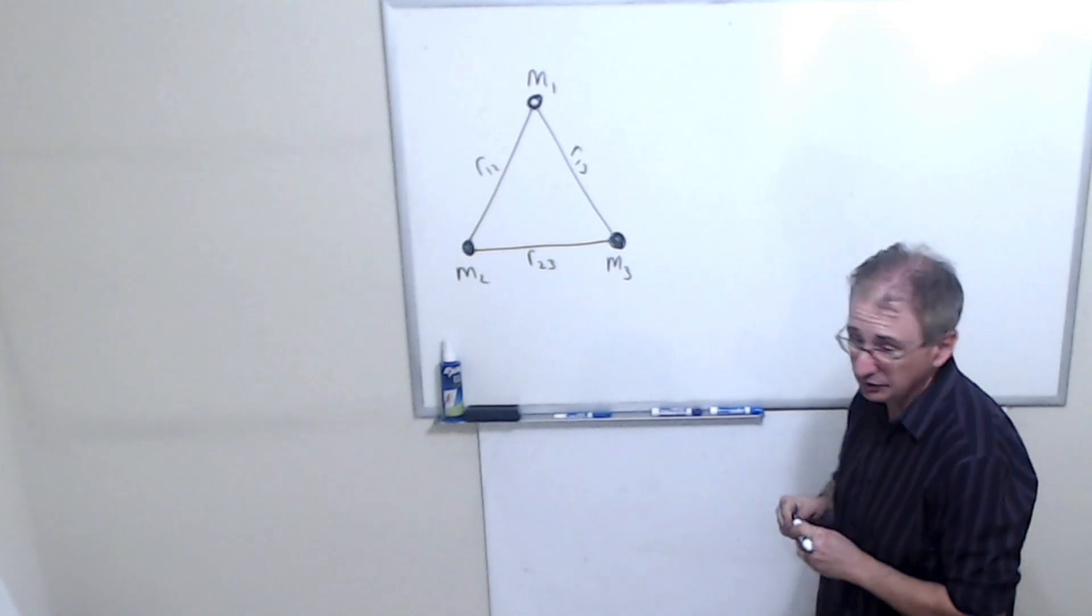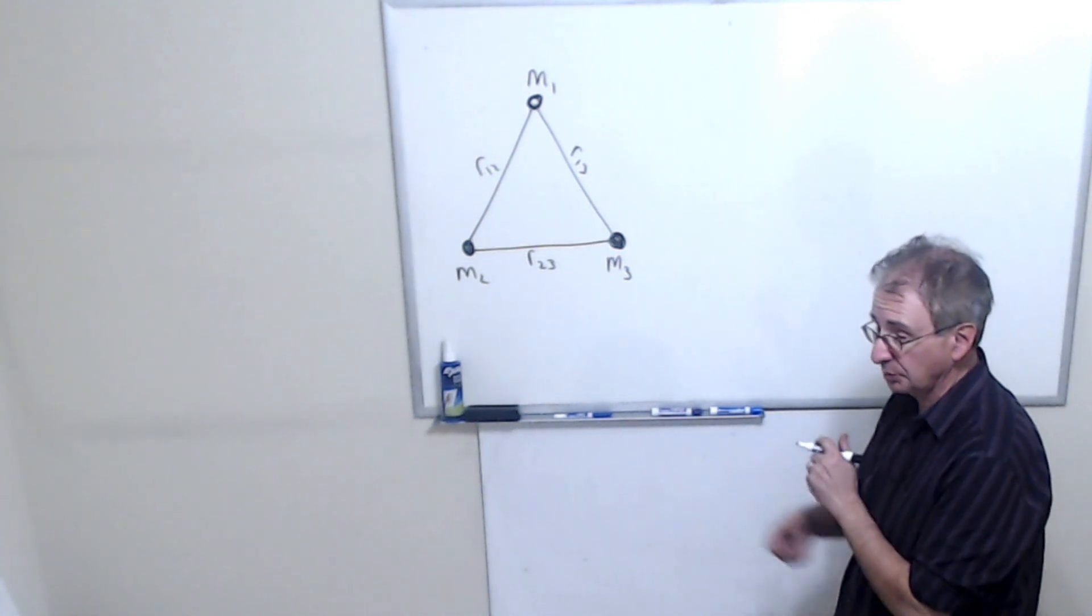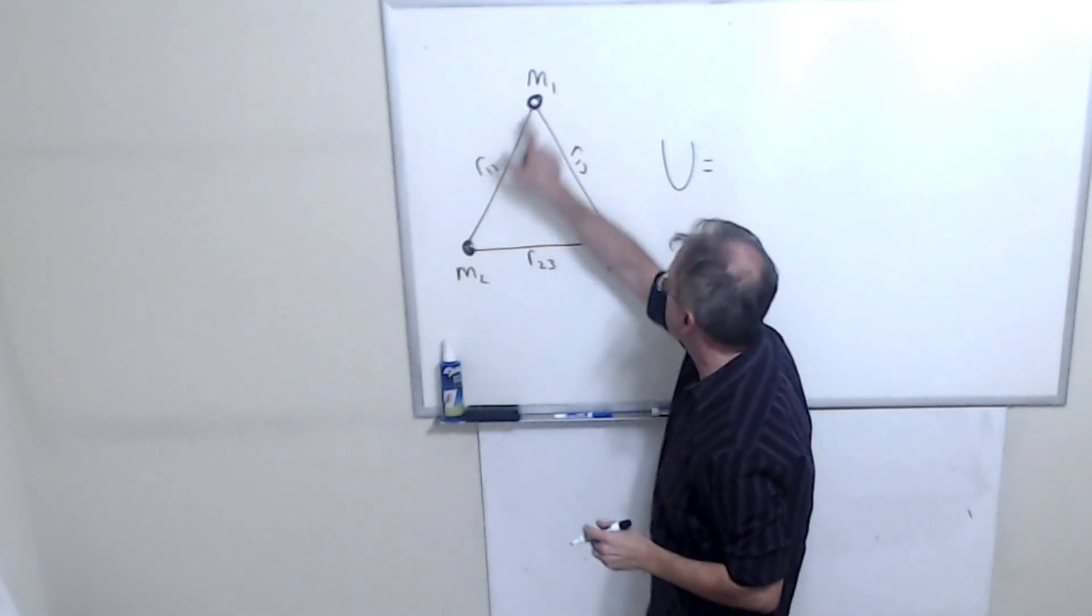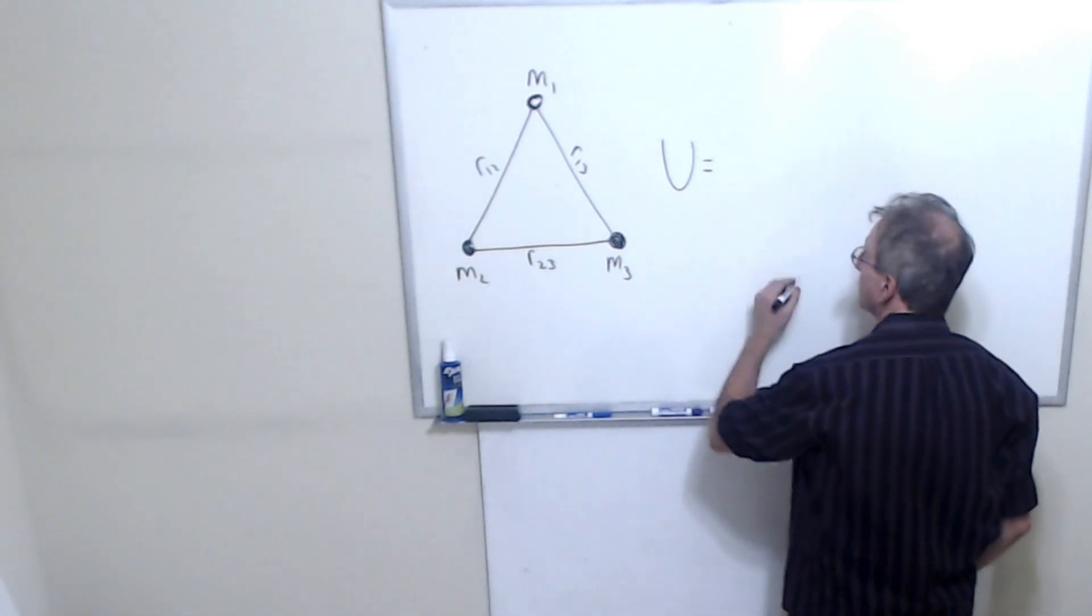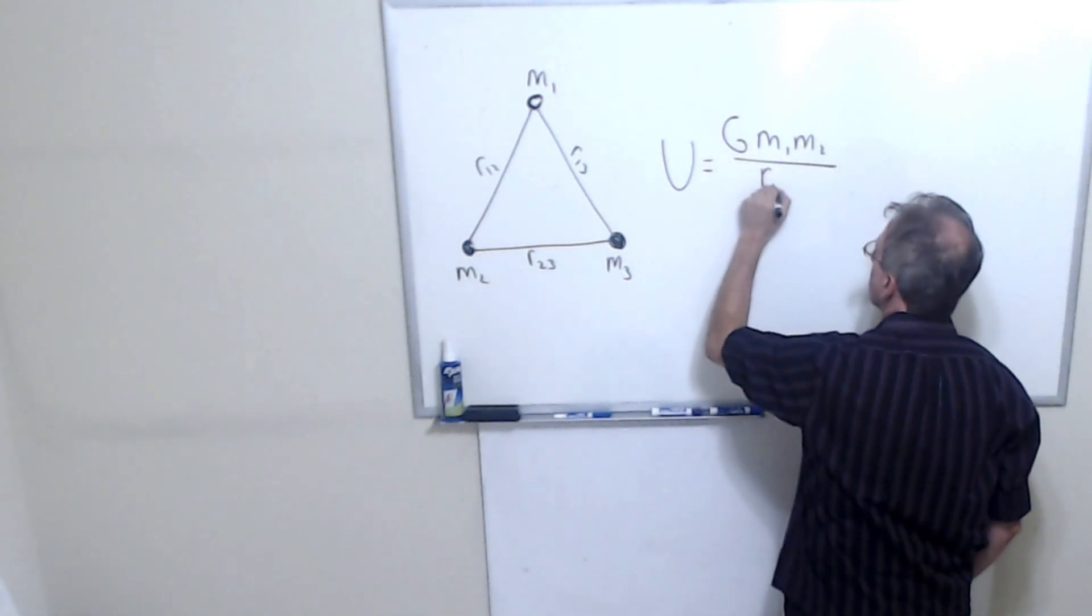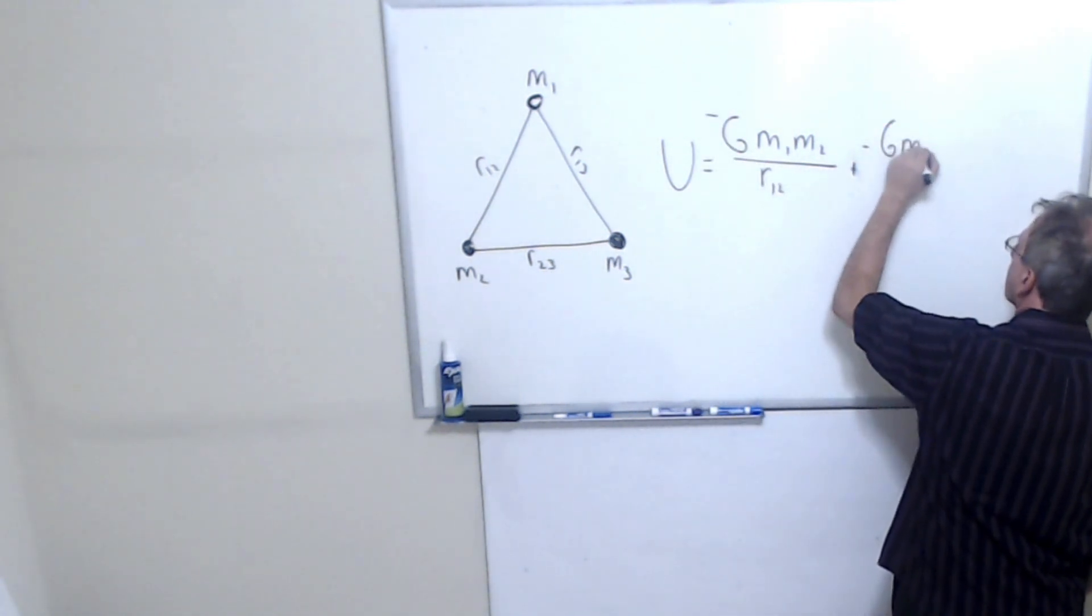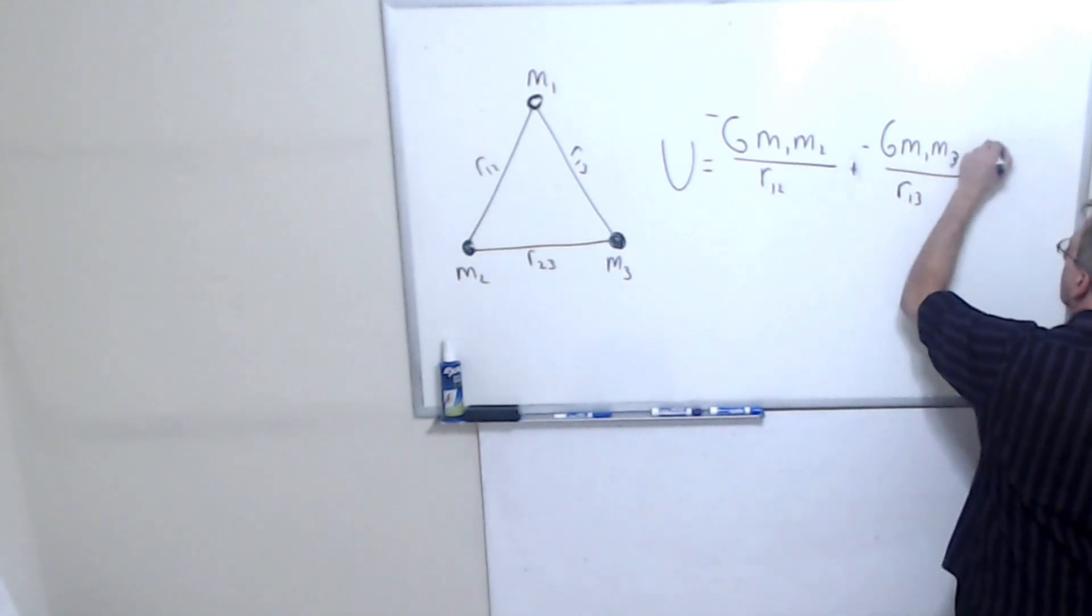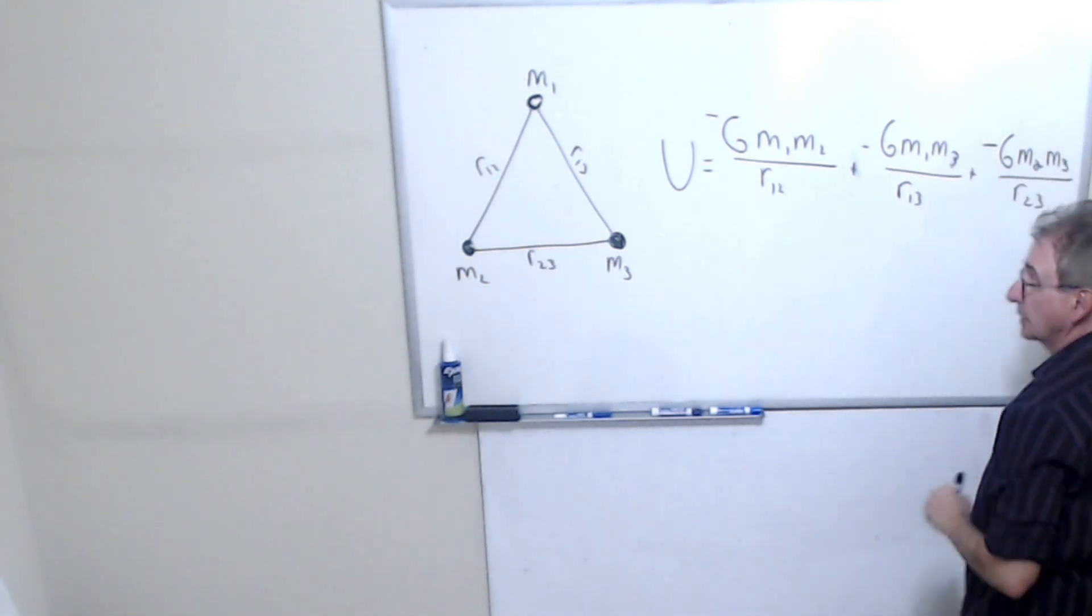And really what I need to do is just consider the potential energy of every pair that makes up the system. So I want to look at the potential energy between these two, the potential energy between these two, and the potential energy between these two. That's going to give me the total energy. I just got to look at all the pairs. And that's my total energy store.